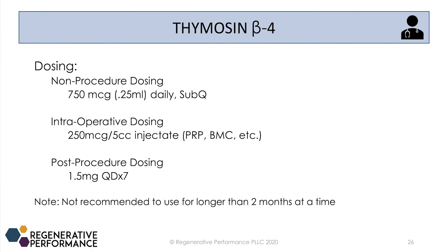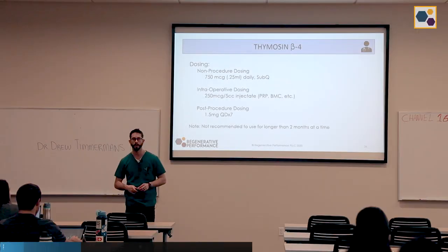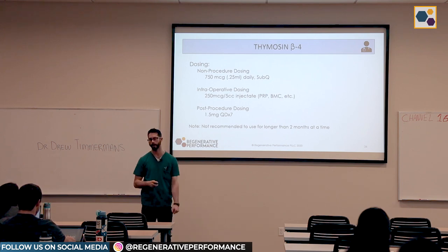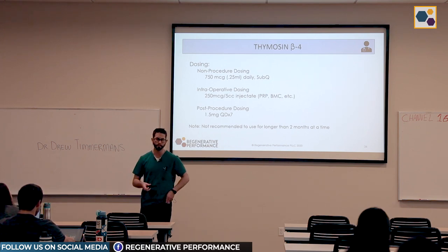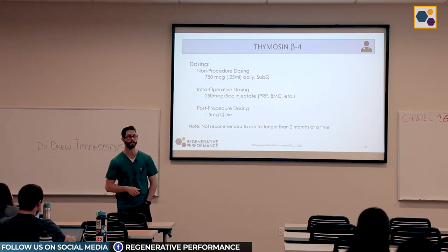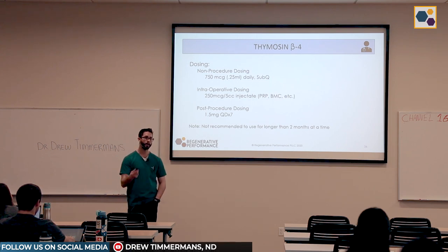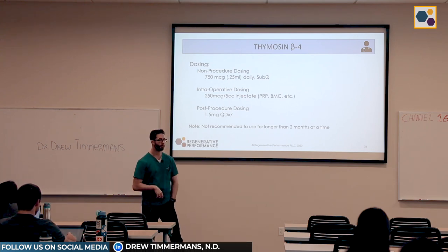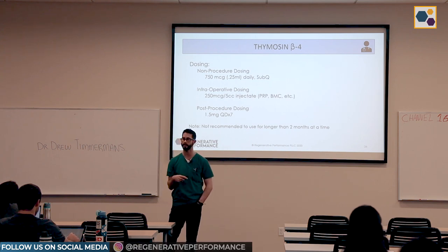Here's how I dose it. Non-procedure dosing: if a patient has a nagging injury and wants to try peptide therapy, we do 750 micrograms subcutaneously daily. Generally I do a 20-day course, which is one vial from my compounding pharmacy, but you can do it up to two months. If using it intraoperatively — actually mixing it with an injectate — we do 250 micrograms per 5 cc's of injectate.